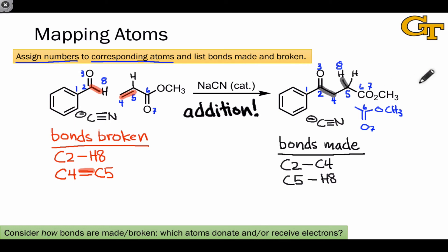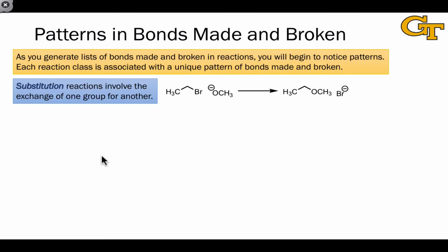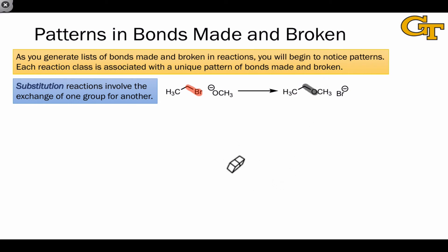We can look at bonds made and broken in the typical reaction classes. In a substitution reaction, one bond substitutes for another. The departing bond — the bond that's substituted for — breaks; here it's the carbon–bromine bond in this particular example. And at one of the atoms involved in that original bond that breaks, we see a new bond that has substituted for the bond that broke. This is true of every substitution process: one bond is made at an atom, and one bond is broken at that atom.